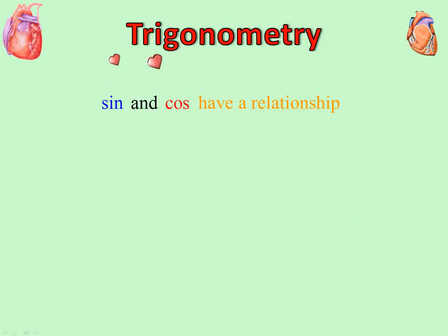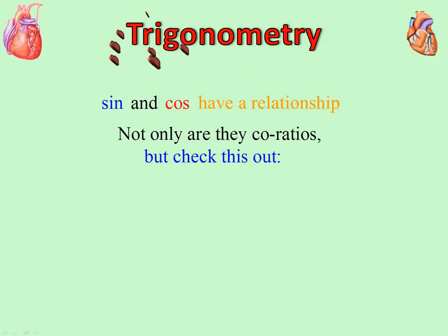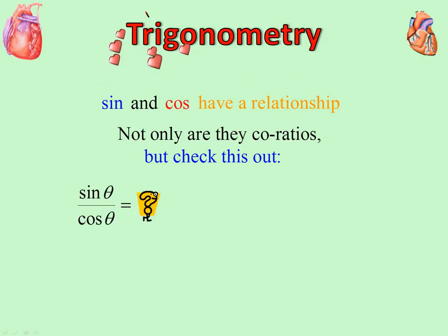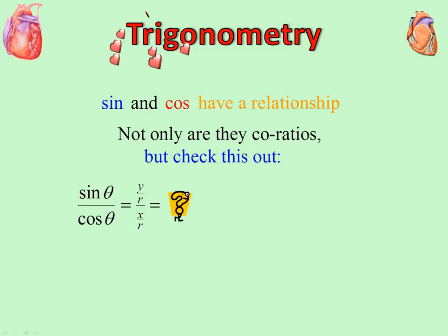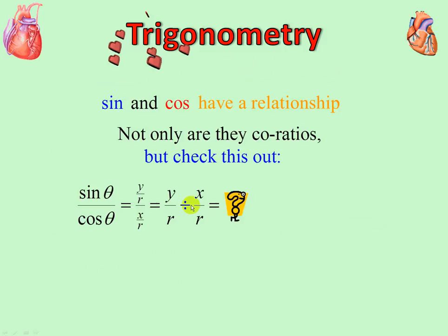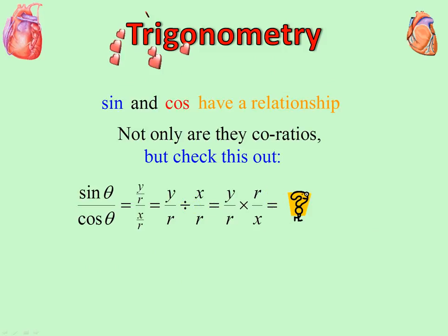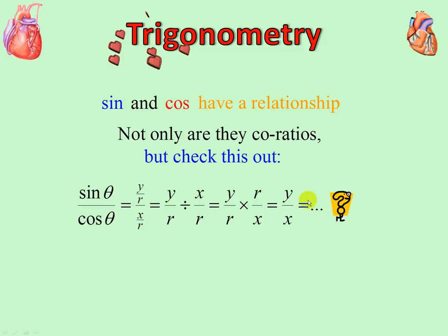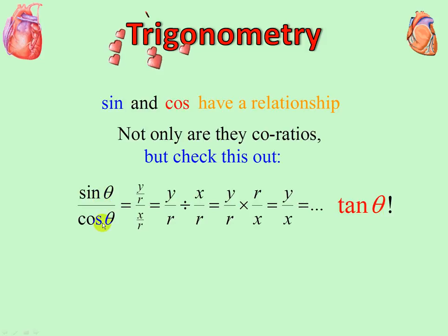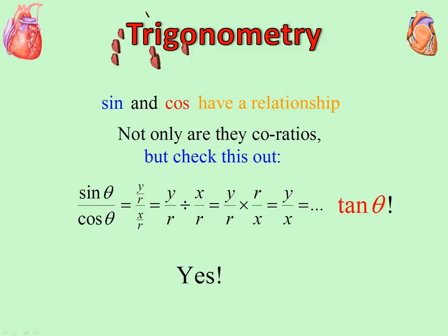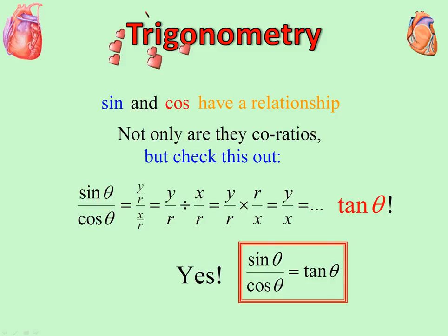Sin and cos have a relationship other than co-ratios. Sin theta over cos theta: that's y over r, divided by x over r, which equals y over r times r over x. Cancel the r's and we get y over x, which is tan theta. So sin theta over cos theta equals tan theta.